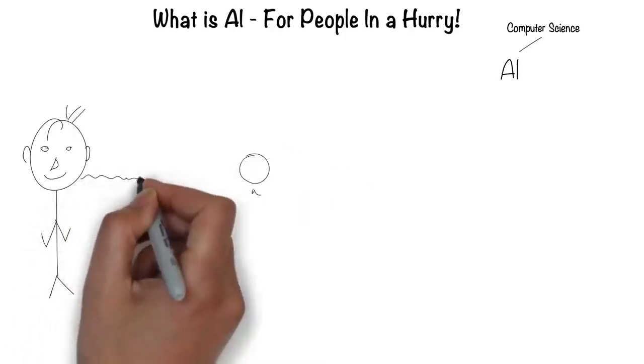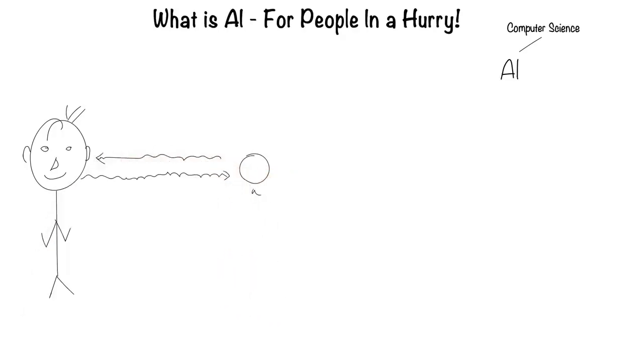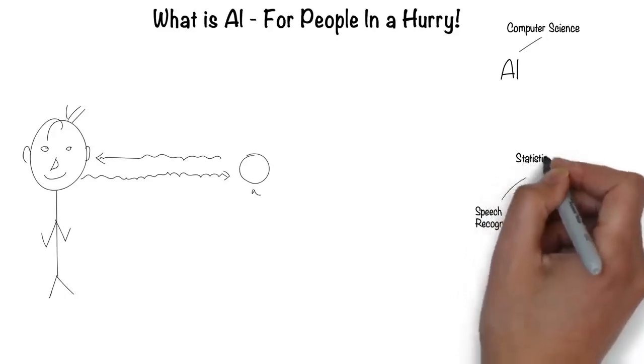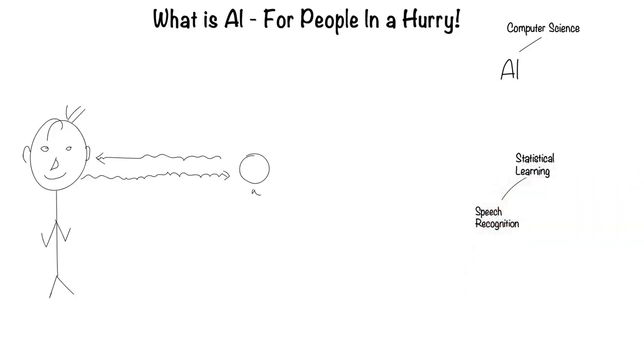Humans can speak and listen to communicate through language. This is the field of speech recognition. Much of speech recognition is statistically based, hence it's called statistical learning.